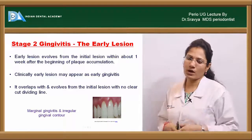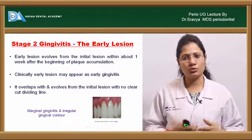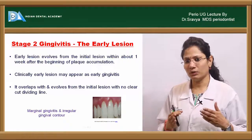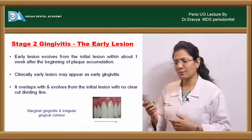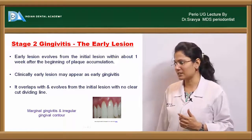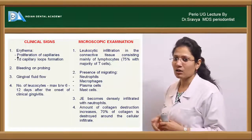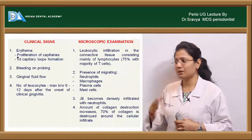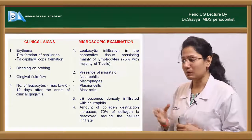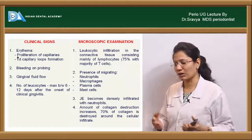Clinically, the early lesion is the stage which appears as gingivitis — whatever clinical features you see of gingivitis are starting at this stage. It overlaps and evolves with the initial lesion with no clear-cut dividing line. Clinical signs include erythema, because of proliferation of capillaries and increased formation of capillary loops, and then bleeding on probing, followed by increased gingival fluid flow.